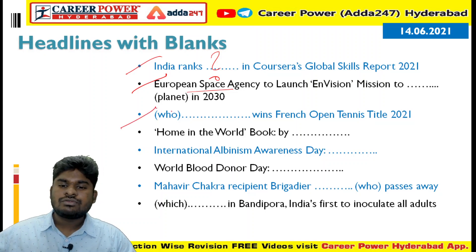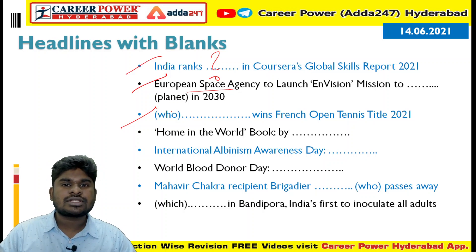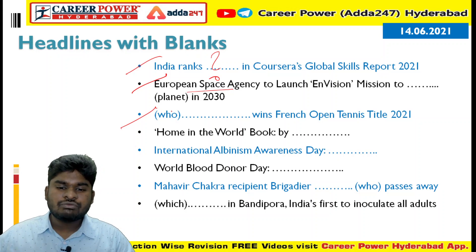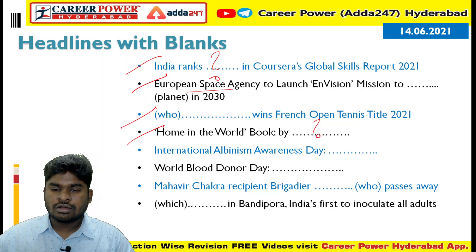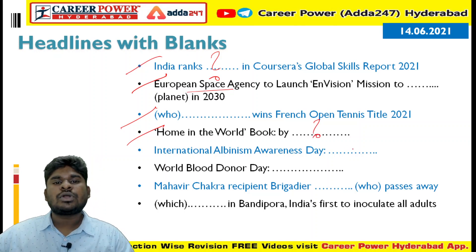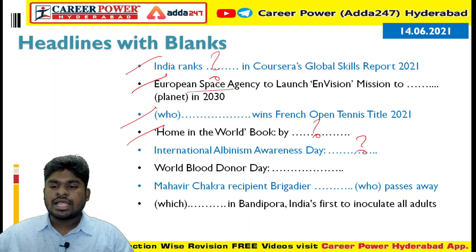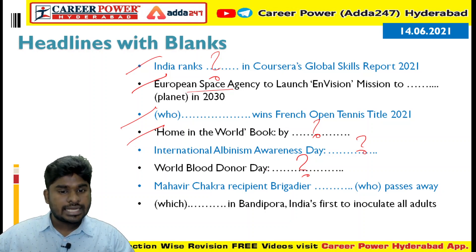In sports news, who wins the French Open title 2021? Next, in books and authors, the book 'Home in the World' was written by whom? For important days, International Albinism Awareness Day is observed on which date, and World Blood Donor Day is observed on which date?